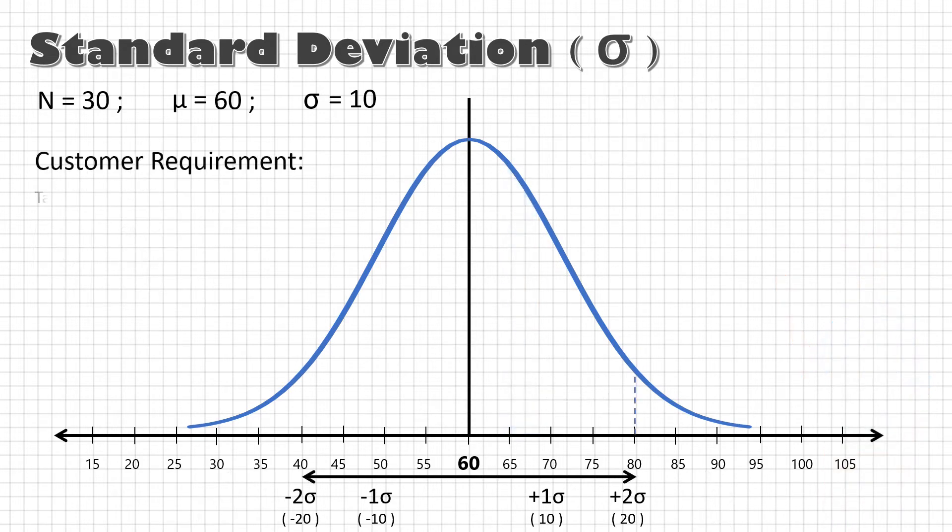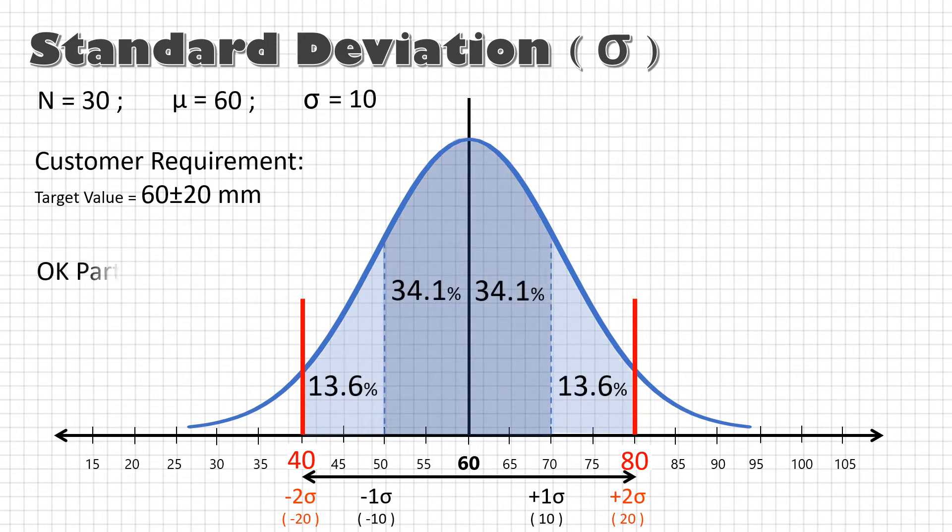So, if the customer needs part between 40 and 80, this process can be called as 2 sigma process. And we may estimate that 95.5% parts will be okay and only 4.5% are going to be rejected.